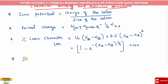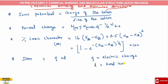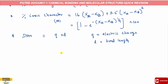Dipole moment is equal to Q into D, where Q is the electrical charge and D is the bond length. From that, the electronic charge is equal to the dipole moment divided by the bond length.